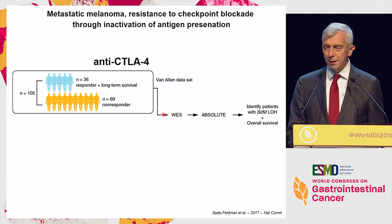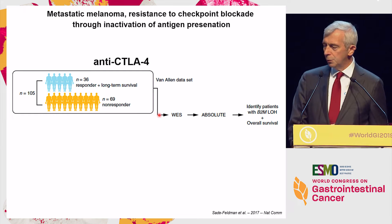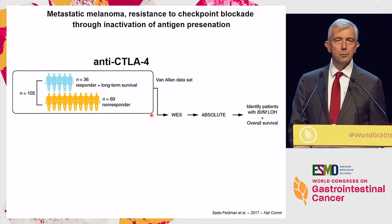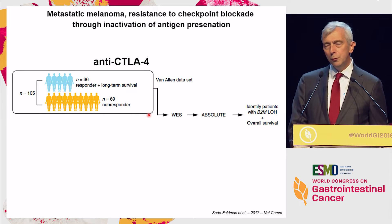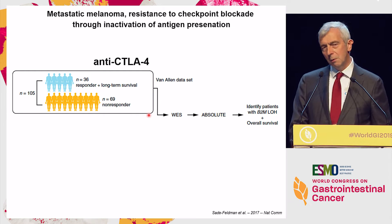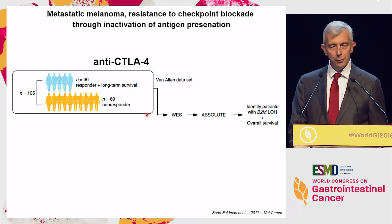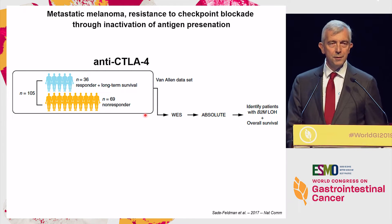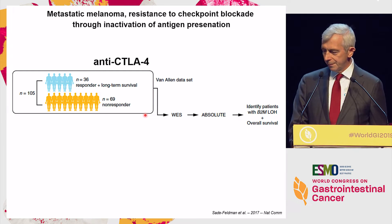Through whole-exome sequencing, they looked for mutations in the beta-2 microglobulin genes. Usually you have two mutations — one allele is deleted, and the other has a nonsense mutation. So the net result is that you do not have functional beta-2 microglobulin at all in these cells.